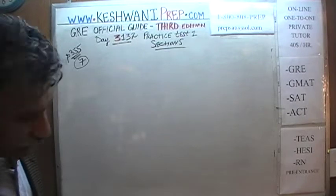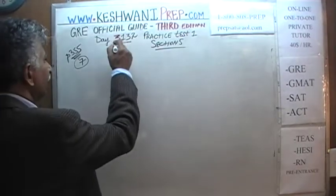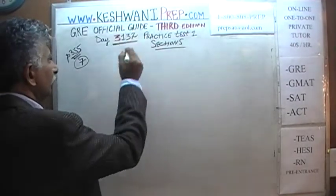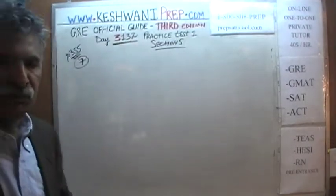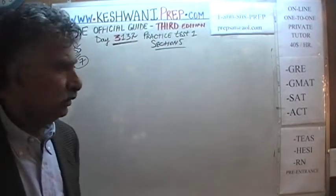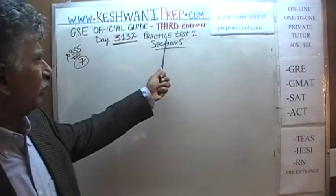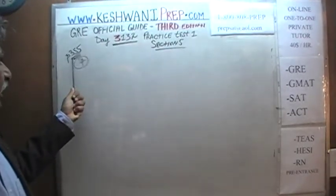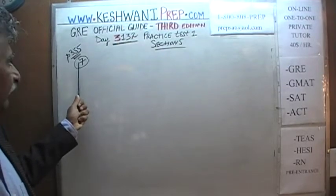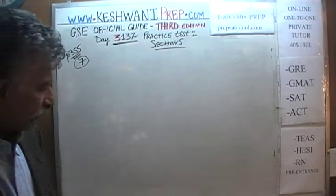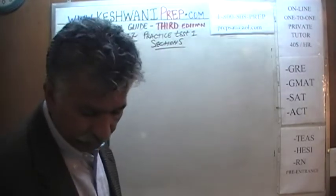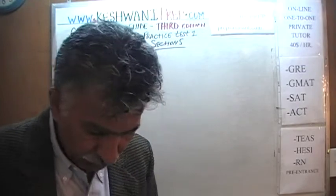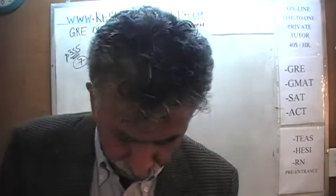Yesterday we started doing the practice test, which you find at the end of the book — the first practice test. Today we are on page number 355. We did the first six problems yesterday, and we will pick up from problem number 7. Make sure the book is in front of you. Turn to page 355 and read the problem to yourself.